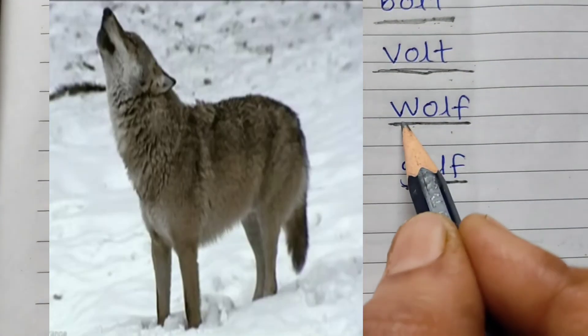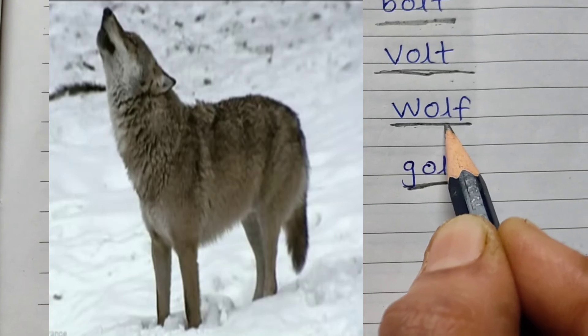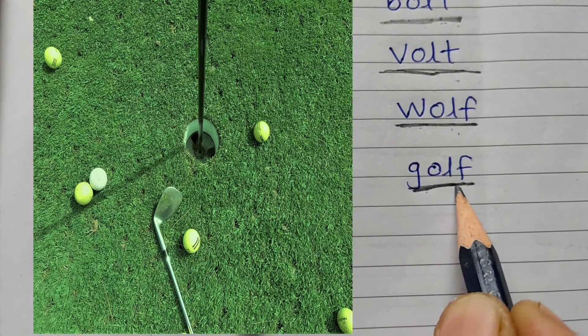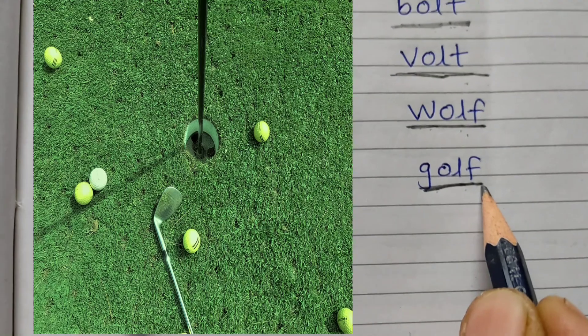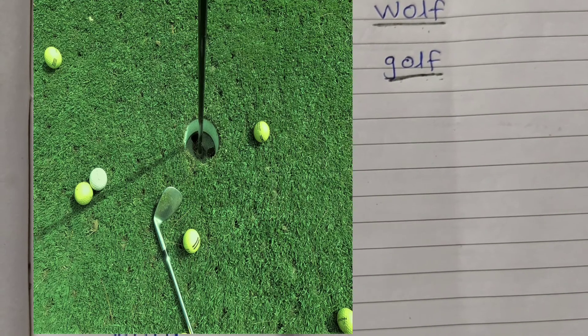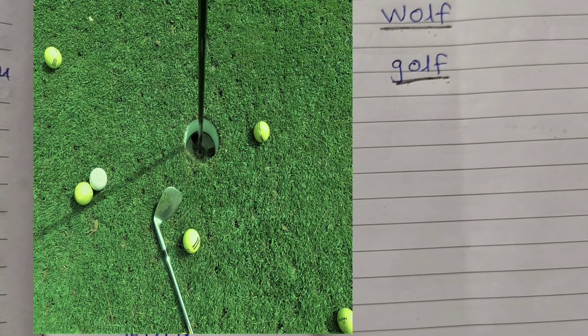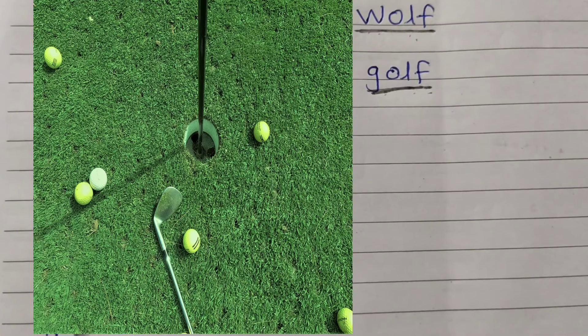Wolf. This is an animal. Wolf. Golf. This is a game. We play this game with stick and a small ball. Okay?